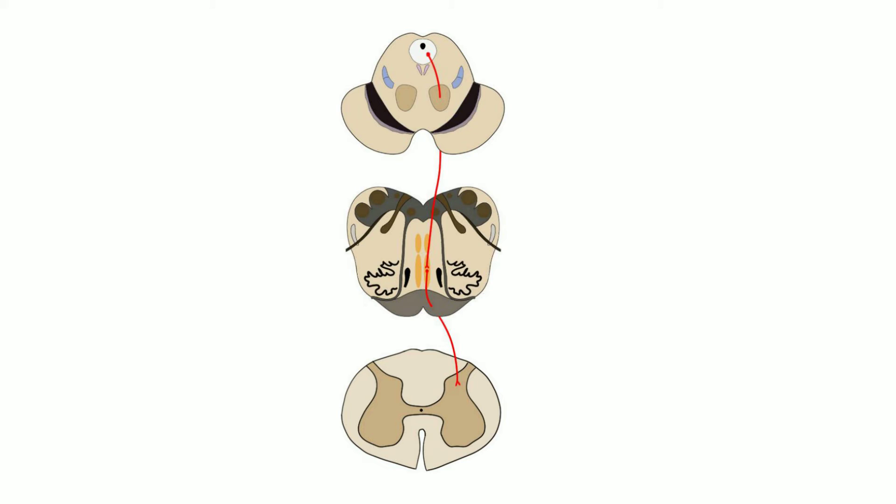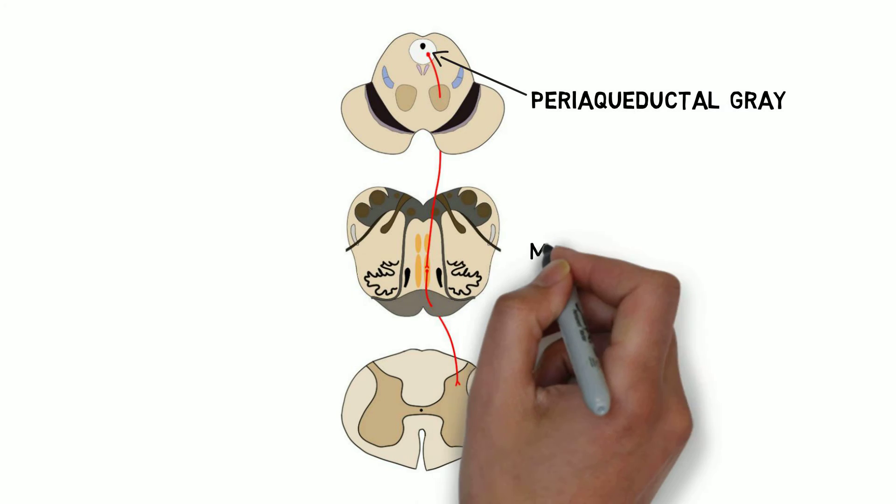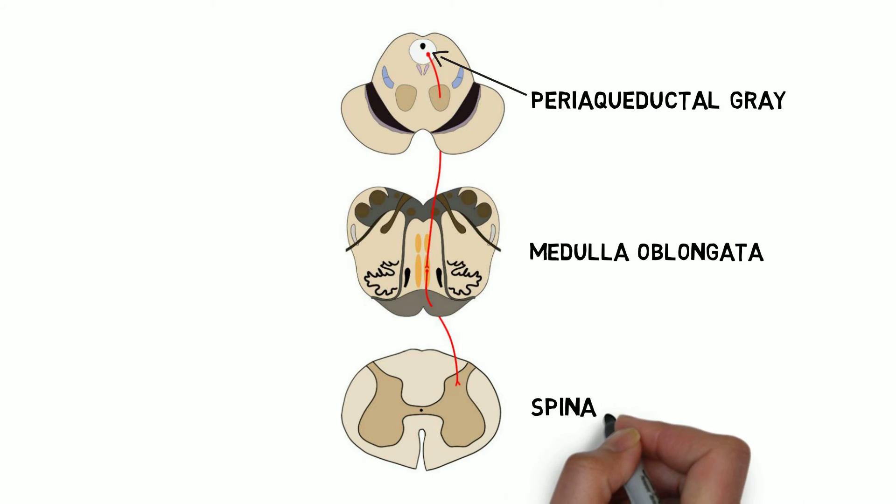Opioids can also act on descending pain modulatory systems to reduce pain. For example, by binding to receptors in an area of the brainstem called the periaqueductal gray, opioids can prompt the inhibition of pain signaling in the spinal cord via a pathway that first synapses in the medulla.